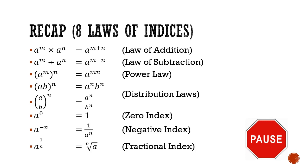So for your zero index law, it states that anything raised to the power of 0 gives you 1, except for 0 to the power of 0. So that's a special exception.